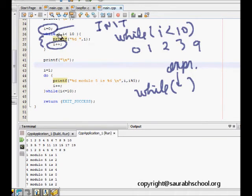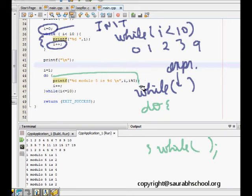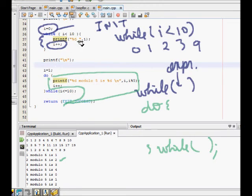The next is called do while. Do the body, and then while some condition. This says that at least once, whatever the body is will be executed. We see that 1 modulo 5 is 1, 2 modulo 5 is 2. This will execute till i is less than 10. The only difference is that at least once this body will be executed. In the while loop, if I had put i equals 20, no time the loop would have executed.